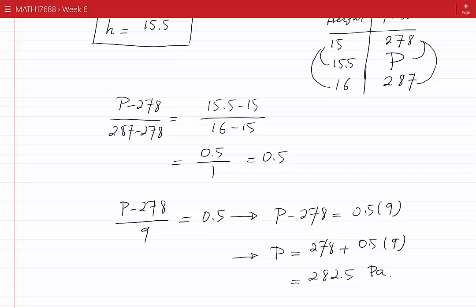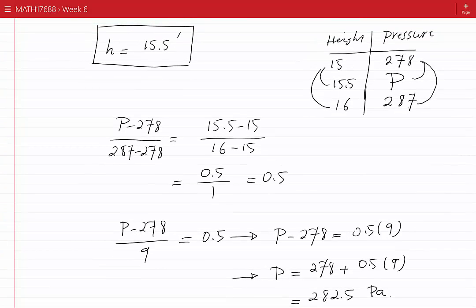Now, there was an easier solution for this question. Because 15.5 is exactly between 15 and 16, or in other words, it is the average of 15 and 16.